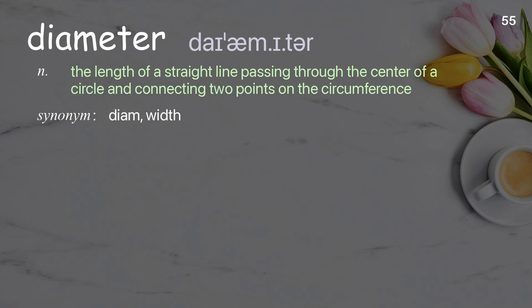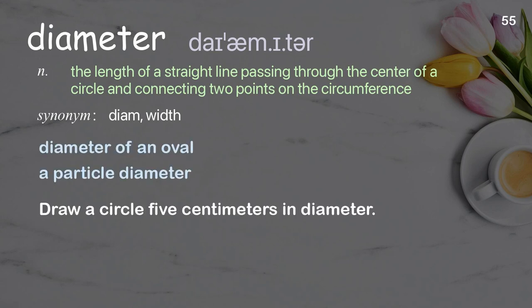Diameter: the length of a straight line passing through the center of a circle and connecting two points on the circumference. Examples: diameter of an oval, a particle diameter. Draw a circle five centimeters in diameter.